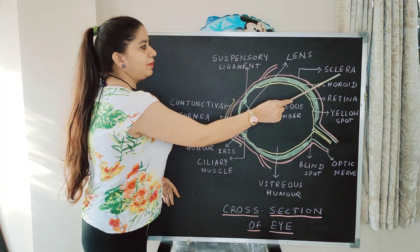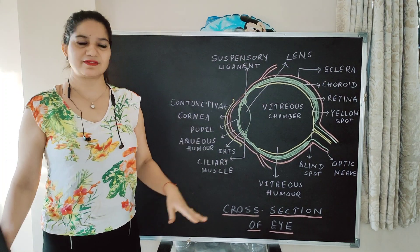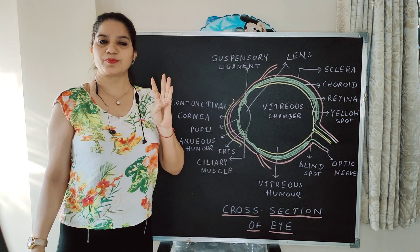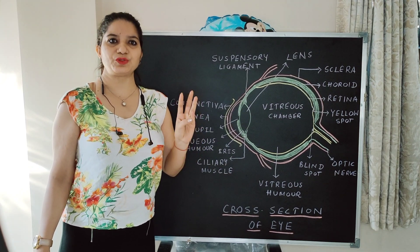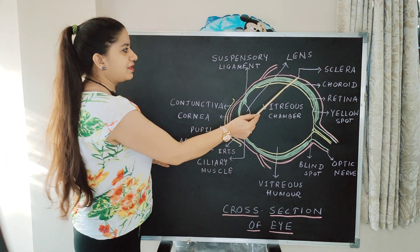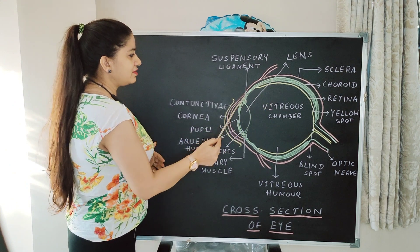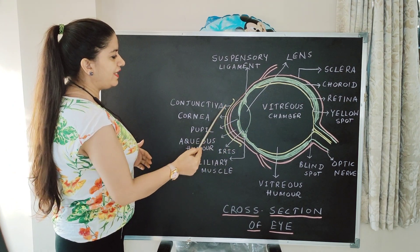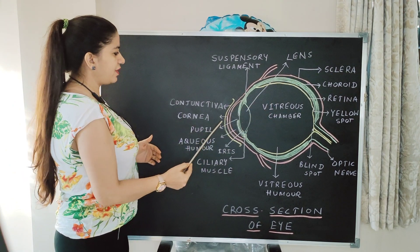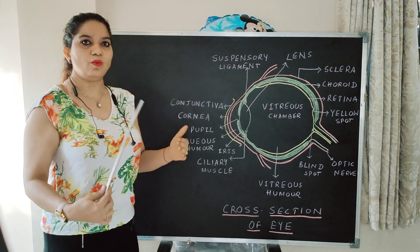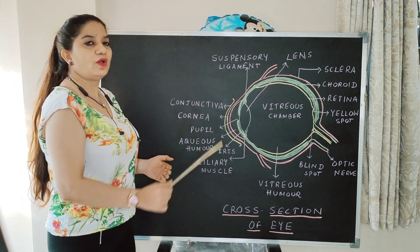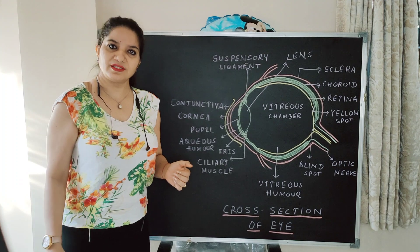Now we will talk about the sclera. Sclera is the outermost layer. It is protective, fibrous tissue and it is white. When it comes in front, it bulges in the white part.